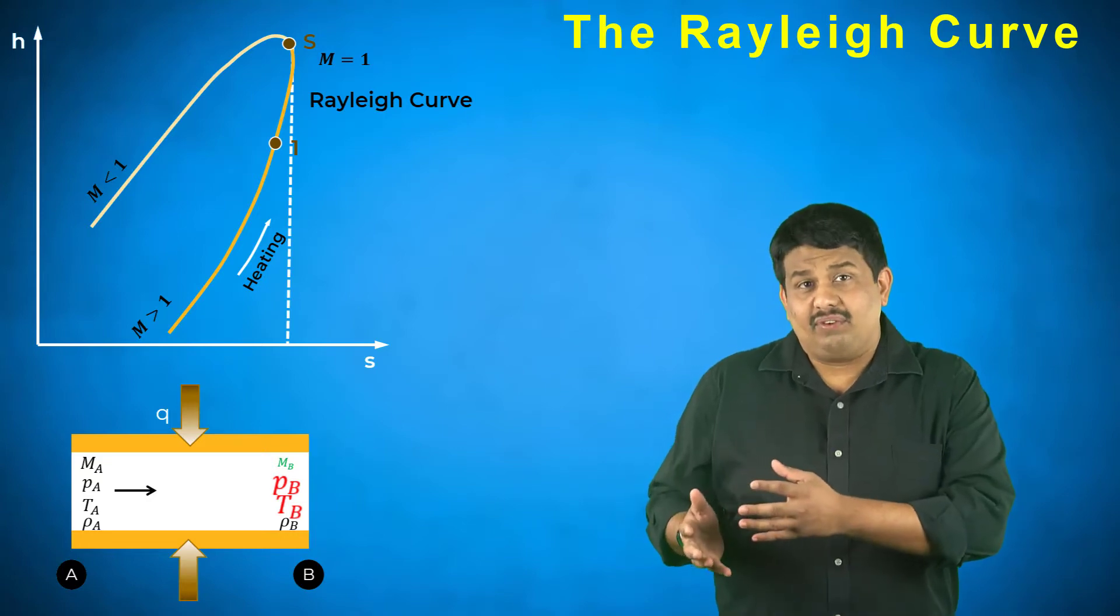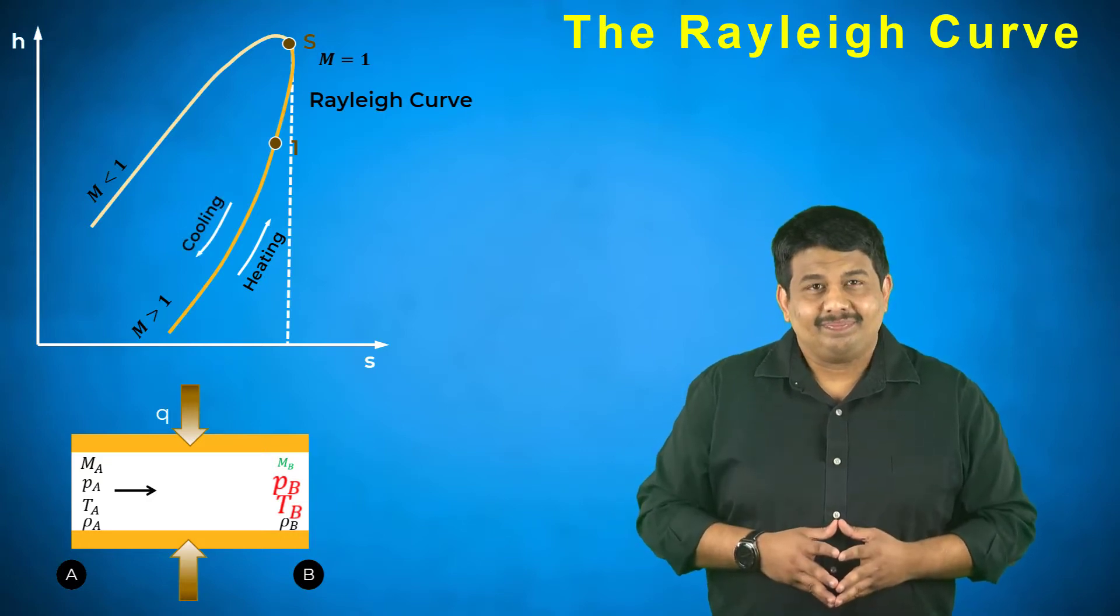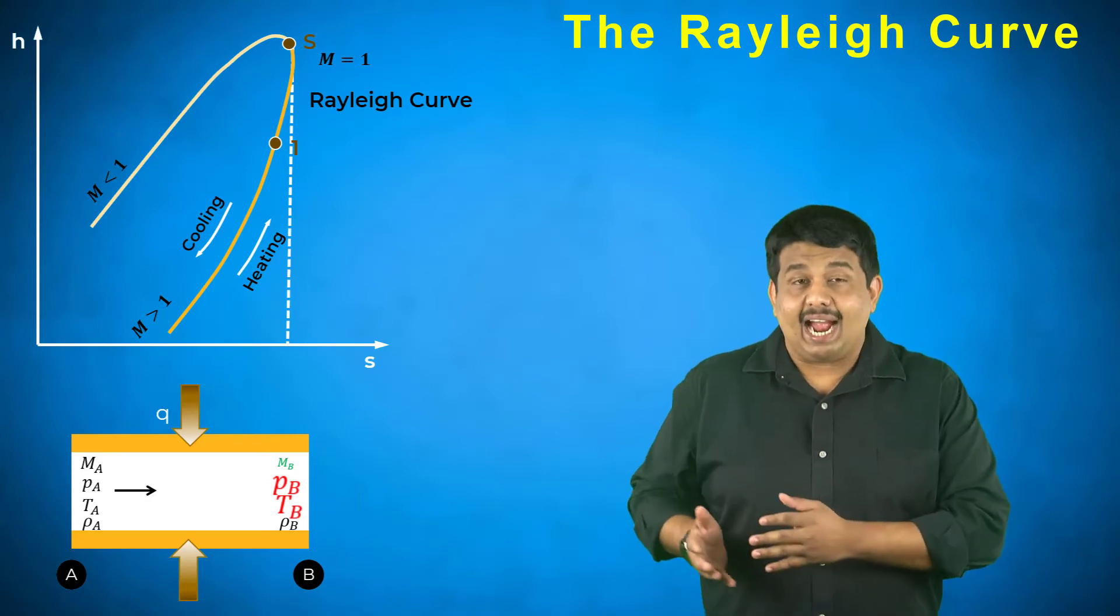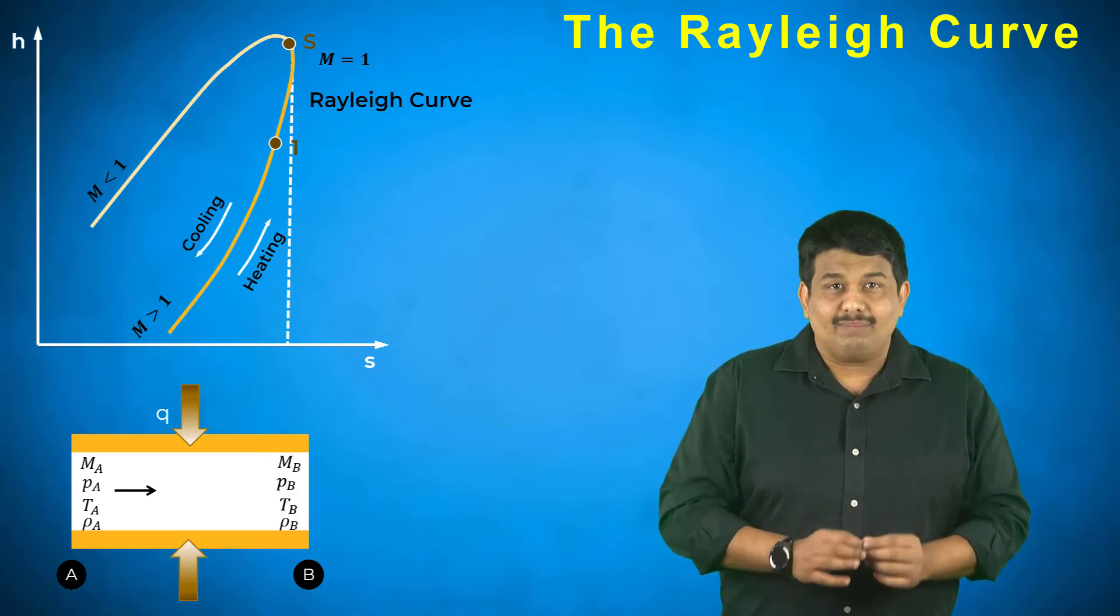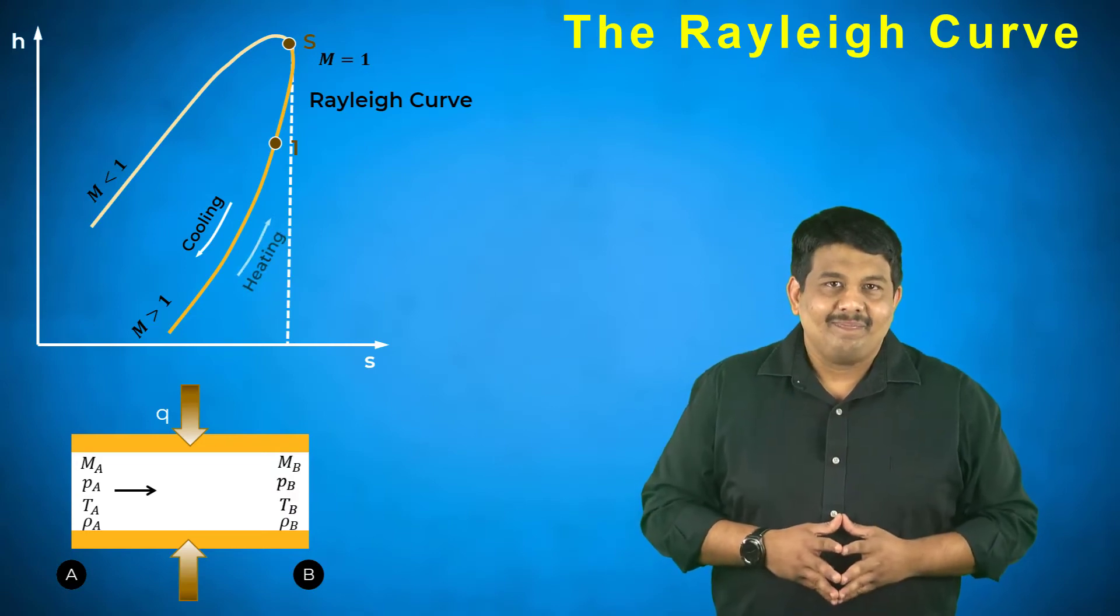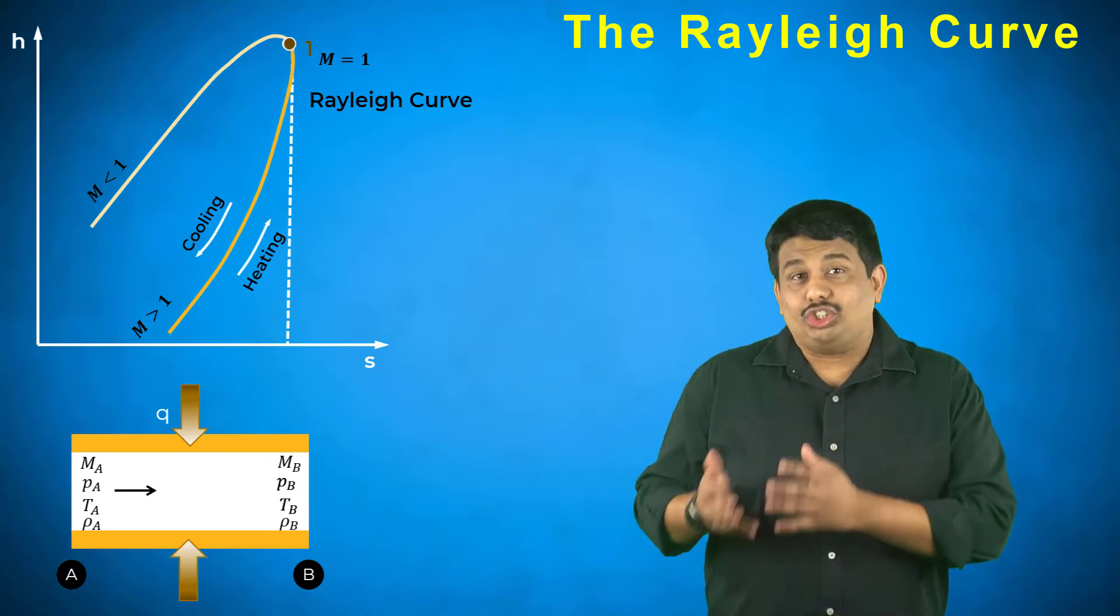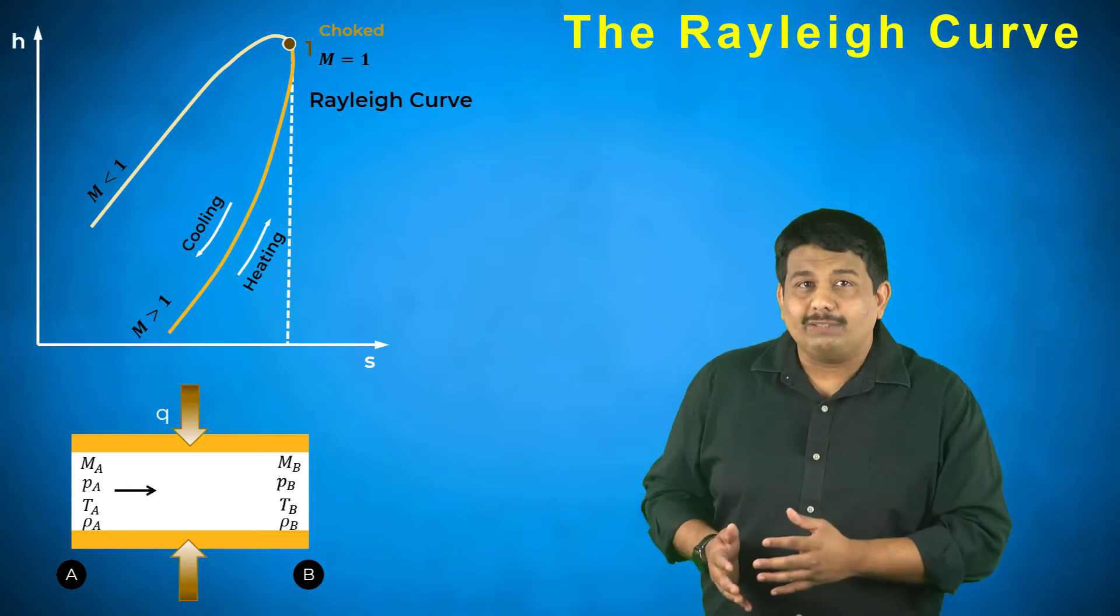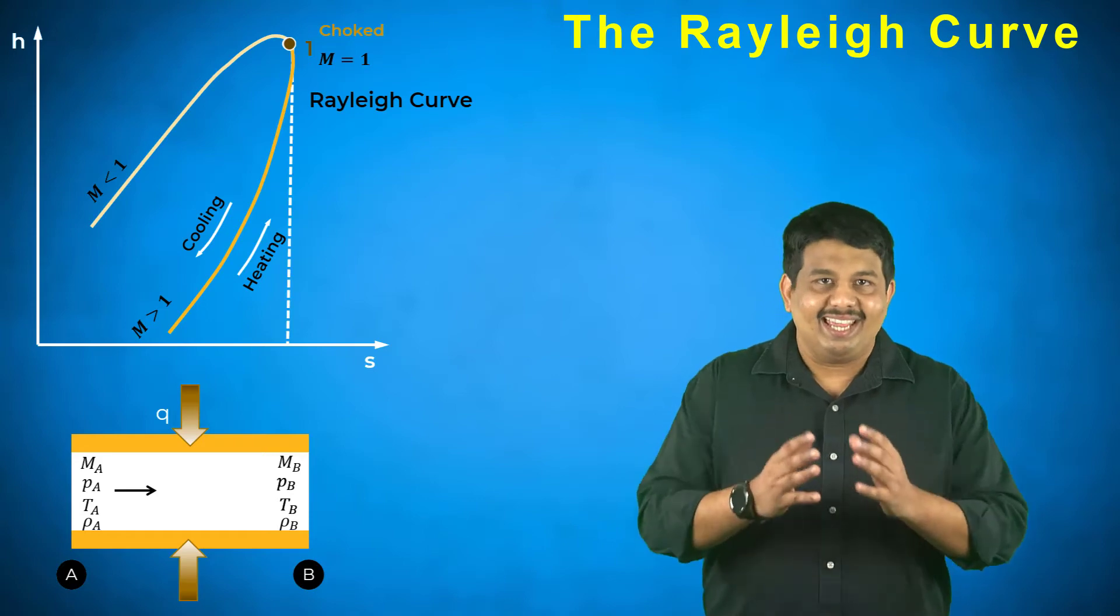An opposite effect is observed when the heat is removed and the flow accelerates. When a certain critical value of Q is added to the supersonic flow, the flow in region becomes exactly sonic. At this point S, the flow is said to be choked as a further increase in Q is not possible without changing the upstream conditions drastically in region A.